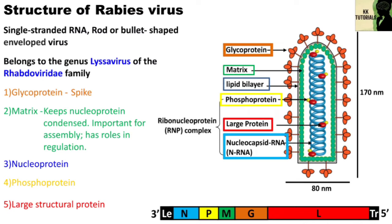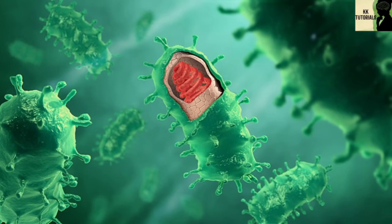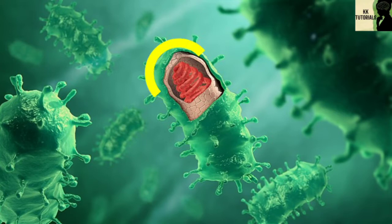The large protein, i.e. L-protein, is well named, its gene taking up about half of the genome. Its large size is justified by the fact that it is a multifunctional protein. This is the three-dimensional structure of rabies virus. Rhabdoviruses have helical symmetry, so their infectious particles are approximately cylindrical in shape. They are characterized by an extremely broad host spectrum, ranging from plants to insects and mammals. One end is rounded or conical and the other end is planar or concave.